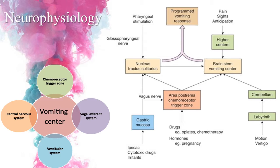The neurophysiology of vomiting involves four main components: the chemoreceptor trigger zone (CTZ), the vagal afferent system, the vestibular system, and the central nervous system. Emetogenic drugs, cytotoxic drugs and irritants directly affect the gastric mucosa, which stimulates the vagus nerve. Through the vagus nerve, there is stimulation of the CTZ or area postrema, then stimulation of the nucleus tractus solitarius and the brain stem vomiting center, programming the vomiting response. Another pathway is pharyngeal stimulation via the glossopharyngeal nerve, which also acts on the nucleus tractus solitarius to program the same vomiting response.